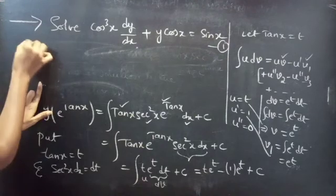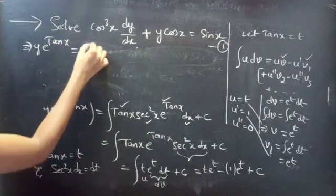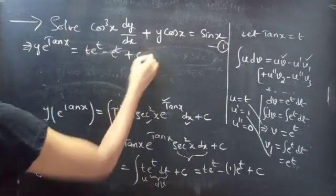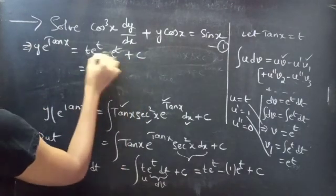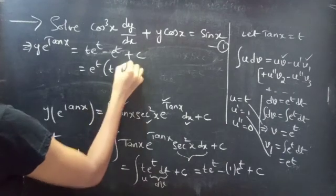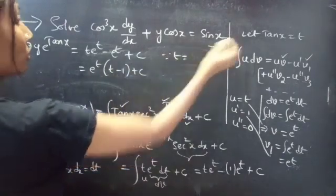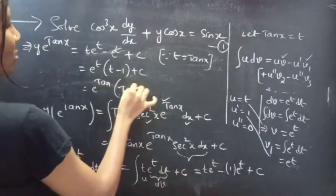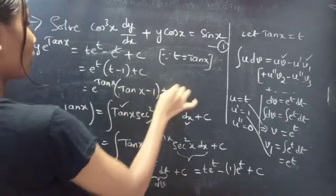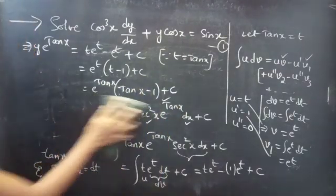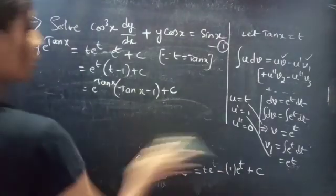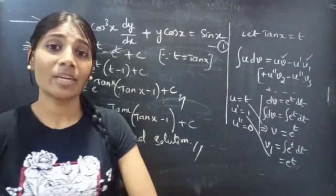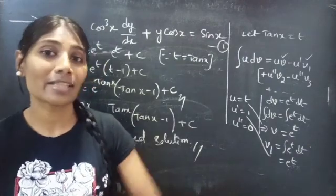So now we have y · e^(tan x) = t·e^t − e^t + c. Taking e^t common: y · e^(tan x) = e^t(t − 1) + c. Since t = tan x, replacing t by tan x: y · e^(tan x) = e^(tan x)(tan x − 1) + c, which is the required general solution. This completes the problem. We have solved a problem from linear differential equations. Hope you understood. We will see in the next video — until then, bye bye!